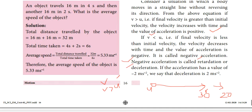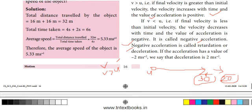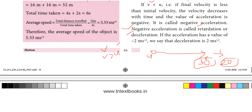Negative acceleration is also called retardation or deceleration. If we say acceleration with a negative sign, that is retardation. When we say deceleration or retardation, the velocity is decreasing.